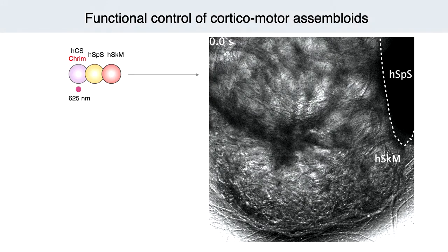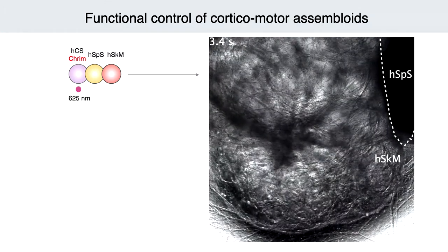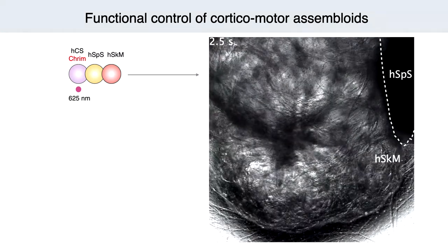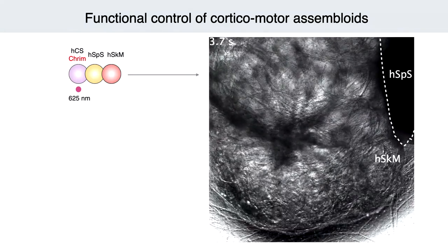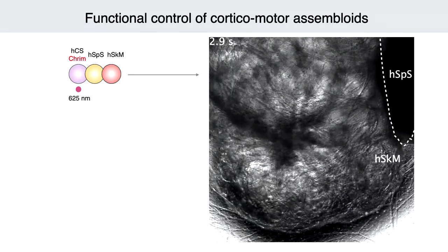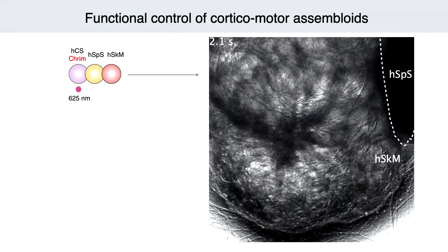In a large assembloid — about 9 millimeters — spinal cord and cortex portions can't even fit in our imaging field of view. Only the cortex has channelrhodopsin, so it's light-sensitive. At the moment of blue light stimulation on the cortical side, muscle contraction is triggered. This tells us that, in a minimalistic way, some of these circuits form without much instruction from the outside. We can now make more than a dozen human brain regions, and there have also been bladder, cardiac, and endometrial assembloids developed in recent years.